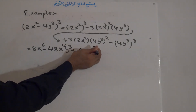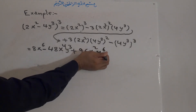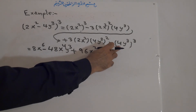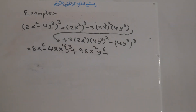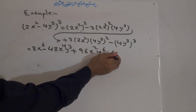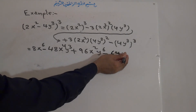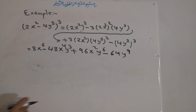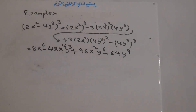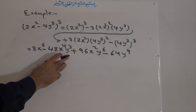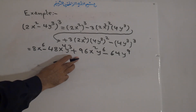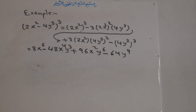So the third term is plus 96x squared y to the power of 6. For the last term: 4 cubed is 4 times 4 times 4 — 4 times 4 is 16 and 16 times 4 is 64 — and y to the power of 3 all cubed gives y to the power of 9. So the final answer is 8x to the power of 6, minus 48x to the power of 4 y cubed, plus 96x squared y to the power of 6, minus 64y to the power of 9.